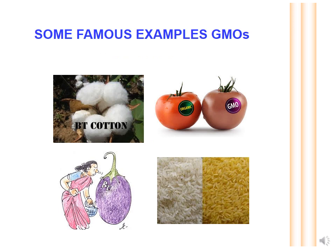The first picture shows Bt cotton, a genetically modified cotton where a gene was transferred from the bacterium Bacillus thuringiensis, making the cotton resistant to pests. The second picture shows the genetically modified Flavr Savr tomato, developed using antisense RNA technology for delayed ripening to combat post-harvest losses during transportation.